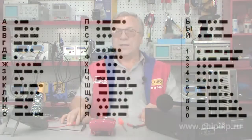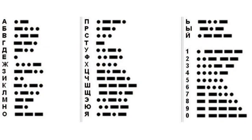Dot and dash code is a good example of serial data transfer. Their dots, dashes, and pauses, which form letters and numerals, are successively alternating in the same channel or same radio frequency.